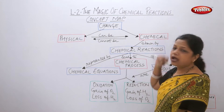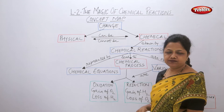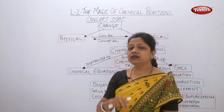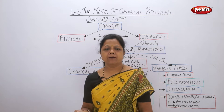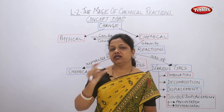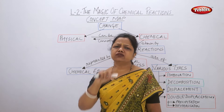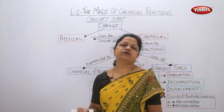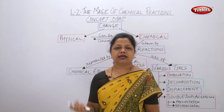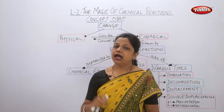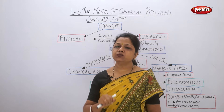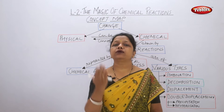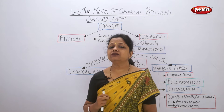This change can be of two types: physical and chemical. Physical change means where no new substance is formed, but there is a change in state, a change in form, or a change in shape. Such changes are physical changes — they are changes that you can observe directly.